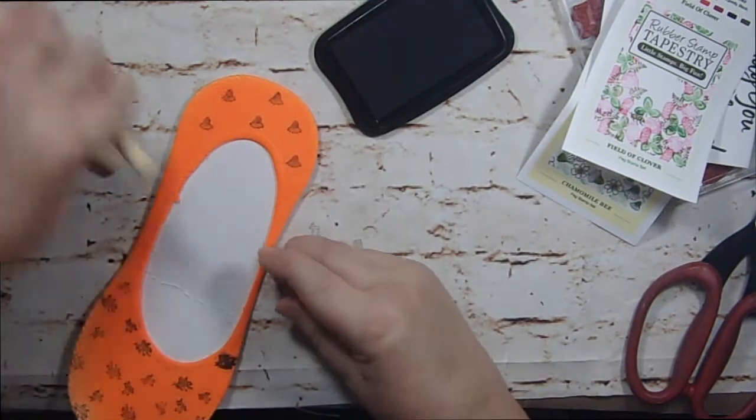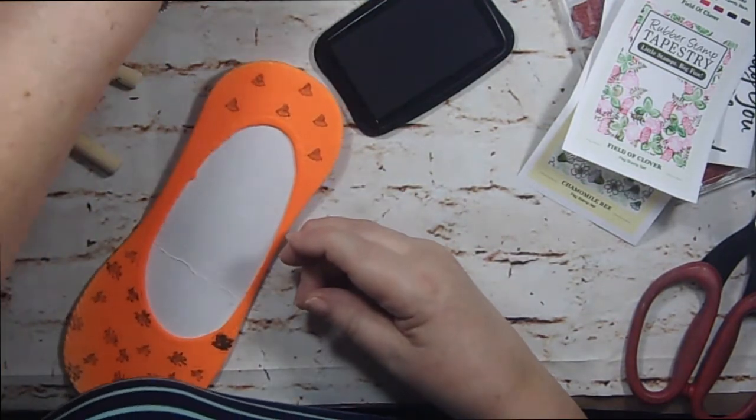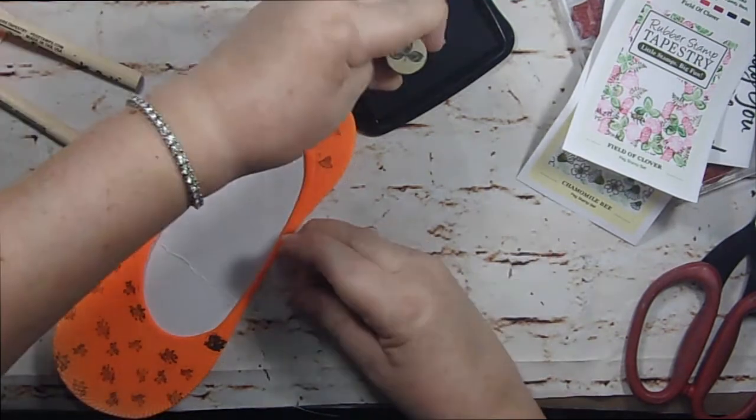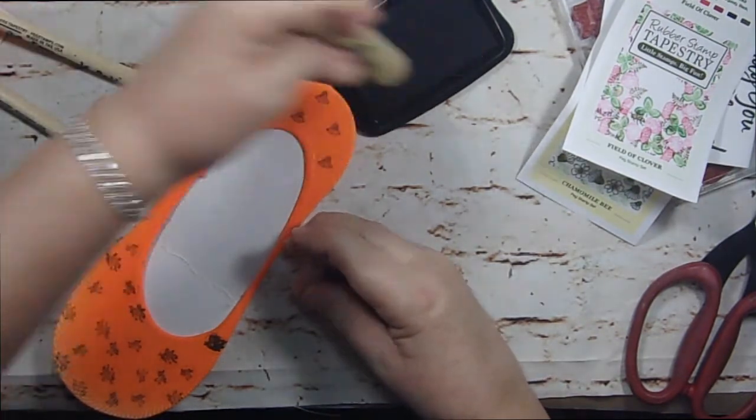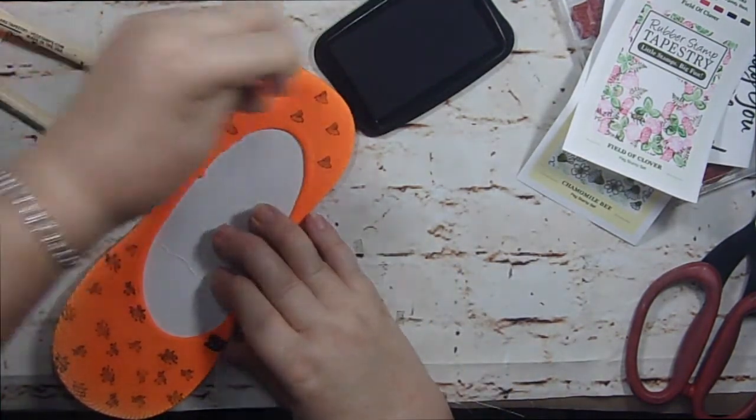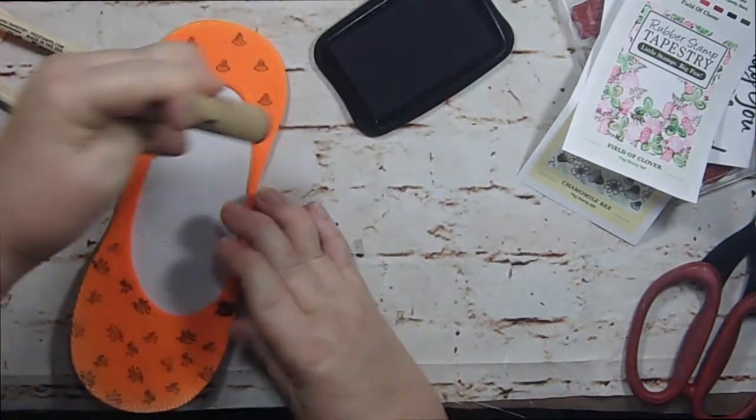Then we'll do some clover because we'll see what a big stamp does on it. Since we're going crazy now on these orange ones. Actually that stamped well. Let me go to the other sock and we'll stamp on the inside of it and see what it looks like on the inside.